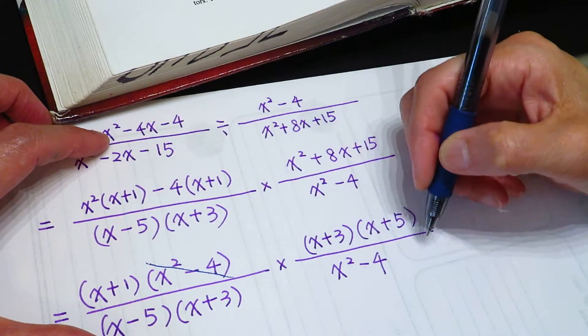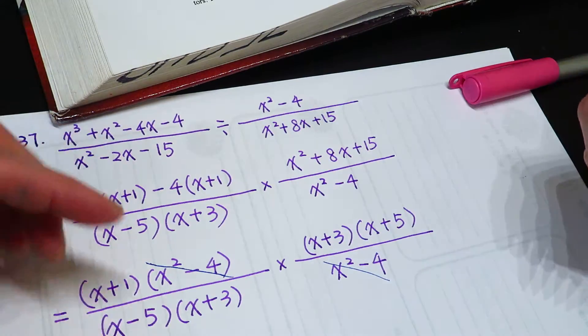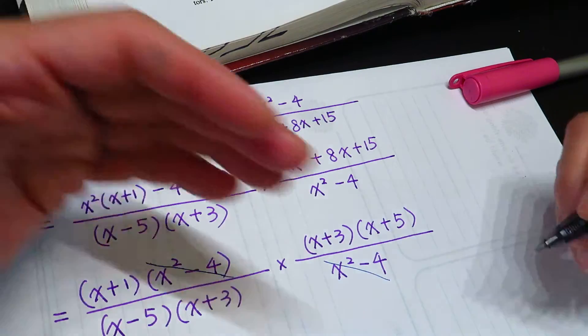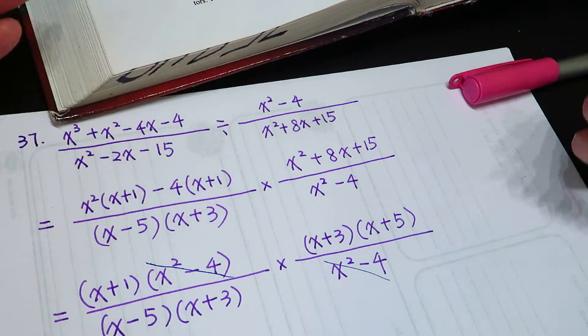the numerator has. They have, they both have x square minus 4. Get them out. They can even out.